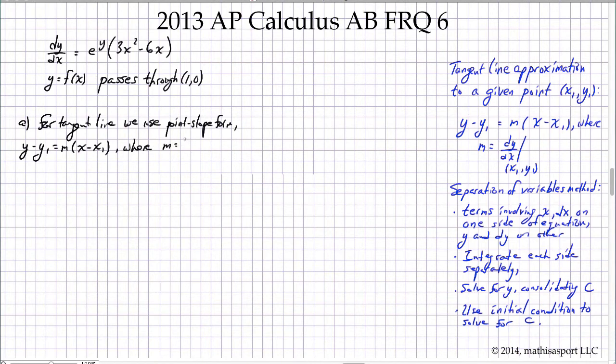Where m, the slope, is simply an evaluation of dy/dx at the point (x₁, y₁), and in our case (1,0). So dy/dx = e^y(3x² - 6x), equals e^0(3(1)² - 6(1)), just plugging in the x and y coordinates for the derivative of the function in question.